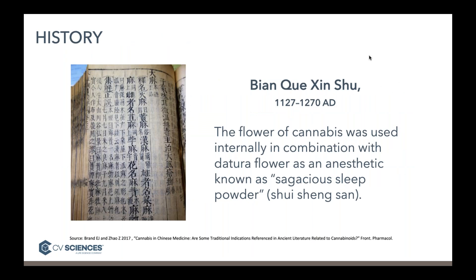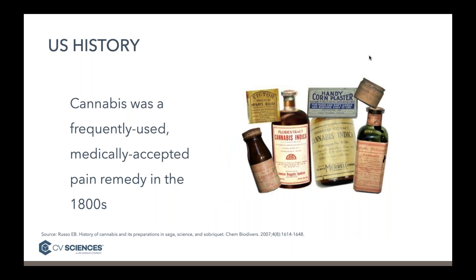Cannabis has been used to treat pain for a very long time. There are historical records from ancient China showing that cannabis flower was used with Datura flower as a surgical anesthetic — anesthesia being really the ultimate form of pain control. There are also artifacts and documents from Egypt, Greece, Israel, and Rome that substantiate the idea that cannabis was used for pain. Including in the United States, in the late 1800s and early and mid-1900s, most pharmaceutical companies manufactured drug products derived from cannabis, and they were used for a variety of medical purposes including pain relief.